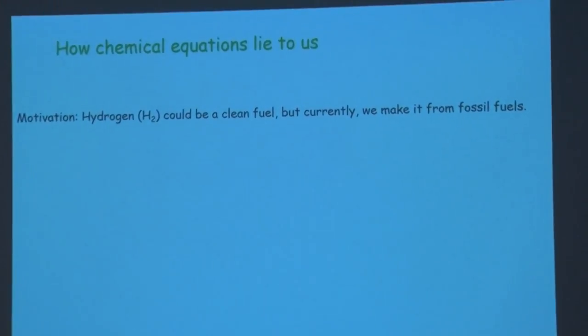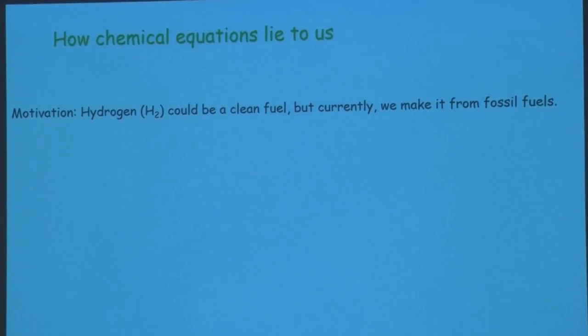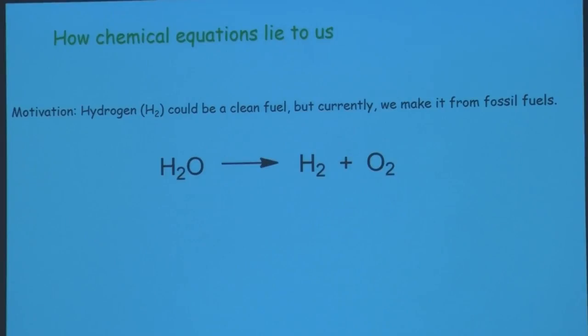Why is synthesis challenging? The first problem is that chemical equations lie to us. For example: I want hydrogen — it's a clean burning fuel — but we make most of our hydrogen from oil, coal, and natural gas. As a student you'd write out a chemical equation to make hydrogen from something generally available, like water. This looks good, but it's actually not chemistry that's going to get us the hydrogen we need.